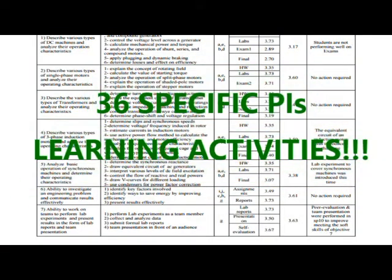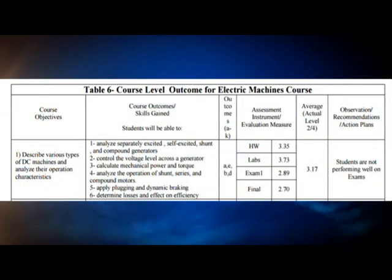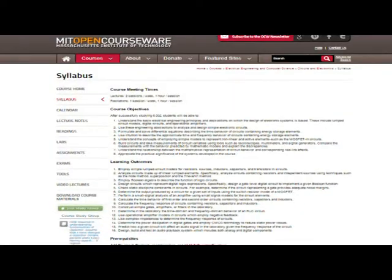Here is the CLO for electric machines. The whole form has 36 PIs linked to their assessments, along with another part of the CLO. Here are some examples from MIT course outcomes with several performance indicators, and another example from UCLA.